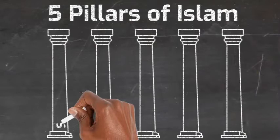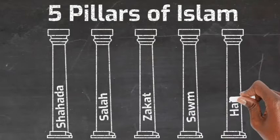The five pillars are: Shahada, Salah, Zakat, Saum, and Hajj.